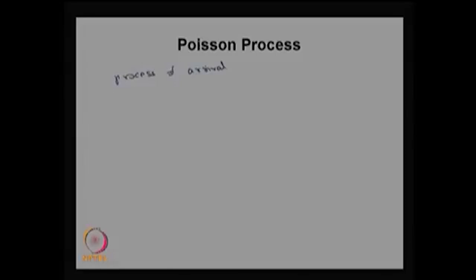So till now we have discussed what is the discrete time arrival process. Now we are going to discuss the continuous time arrival process, that is a Poisson process. In this lecture, I am going to develop what is the Poisson process and how we can derive it from scratch. Suppose you consider the process of arrival of customers at a barbershop.